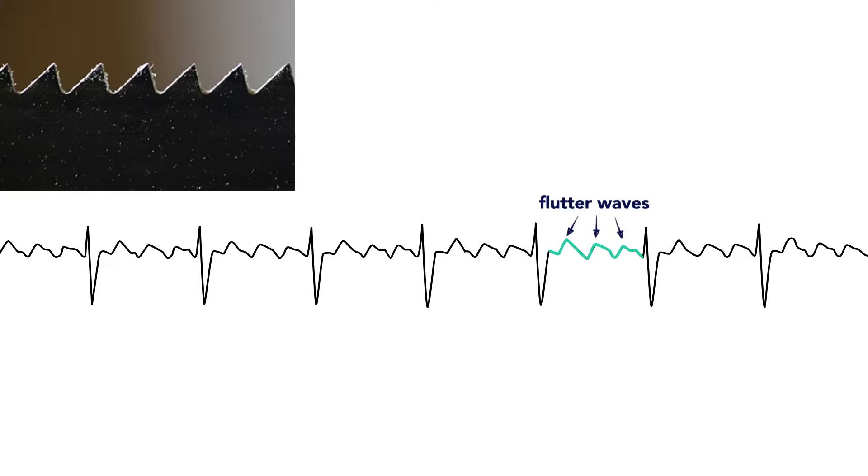Because of this, you can expect the loss of the isoelectric baseline you will see with normal sinus rhythm strips, and you'll typically see what people often refer to as flutter waves or a sawtooth pattern.